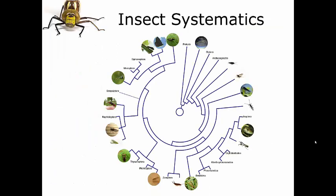Insect systematics is the study of the relationships between groups of literally any size. This can include individual species, genera, families, orders, or populations of mixed species, populations of genera, of families, of orders — whatever. It's just comparison among groups. We want to compare and contrast the relationships within and between these groups, which is why we study insect systematics.